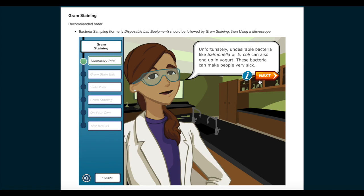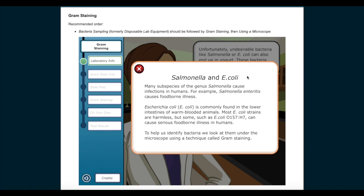Salmonella and E. coli. Many subspecies of the genus Salmonella cause infections in humans. For example, Salmonella enteritidis causes foodborne illness. Escherichia coli, E. coli, is commonly found in the lower intestines of warm-blooded animals. Most E. coli strains are harmless, but some, such as E. coli O157H7, can cause serious foodborne illness in humans.